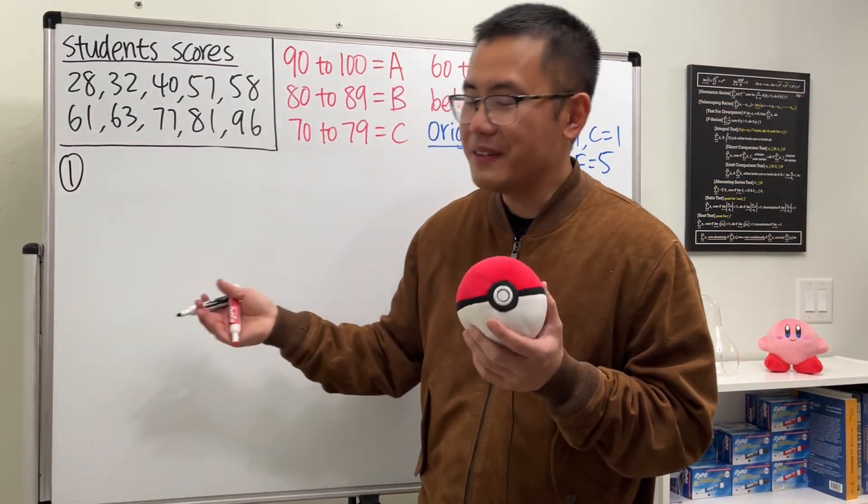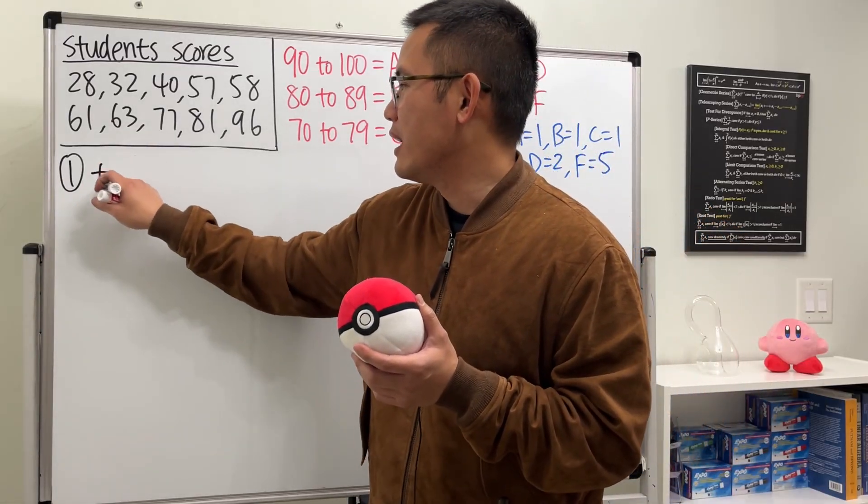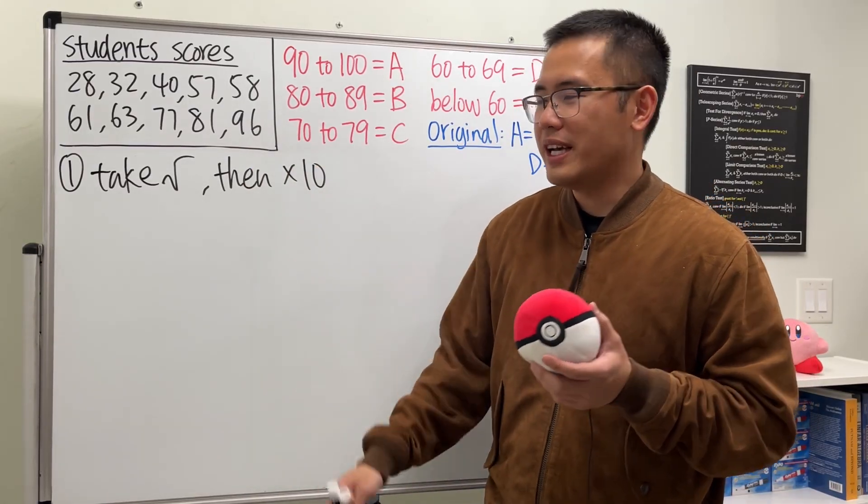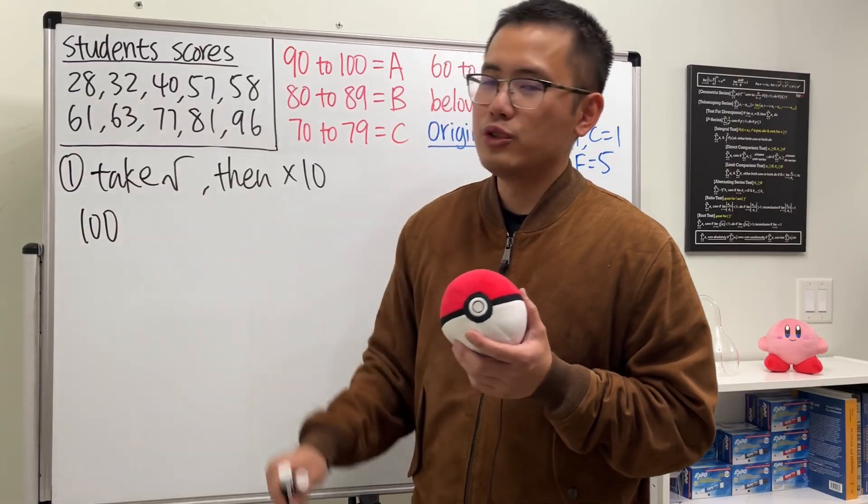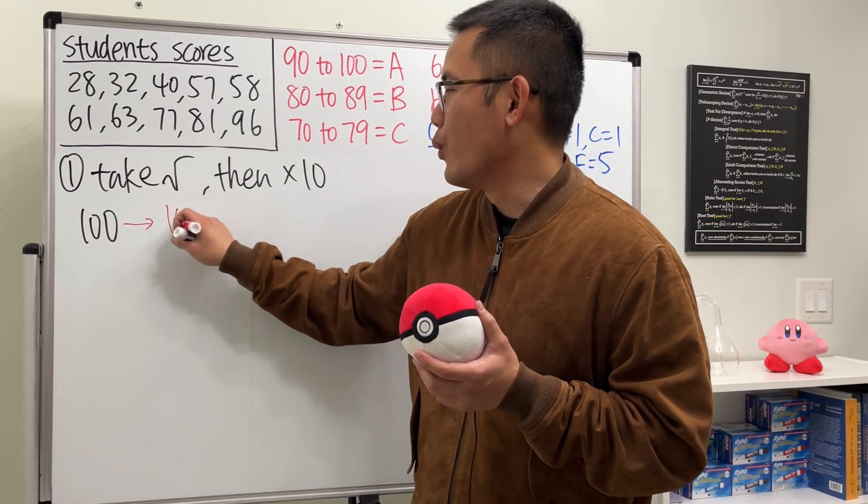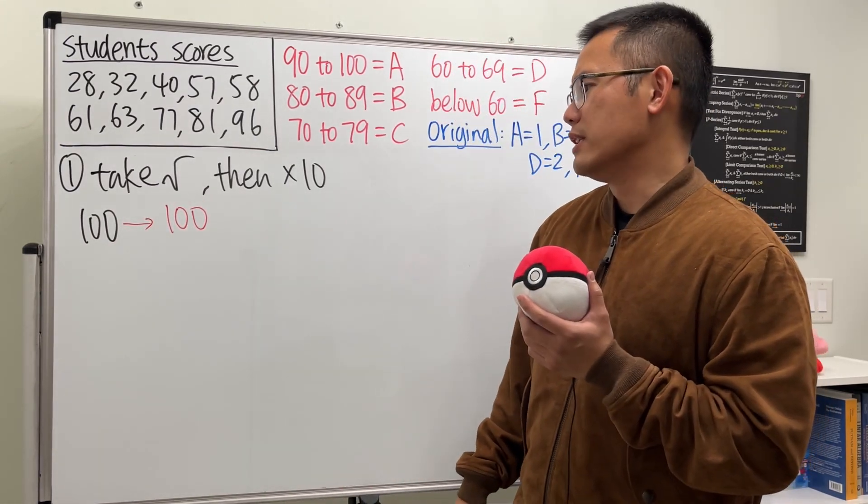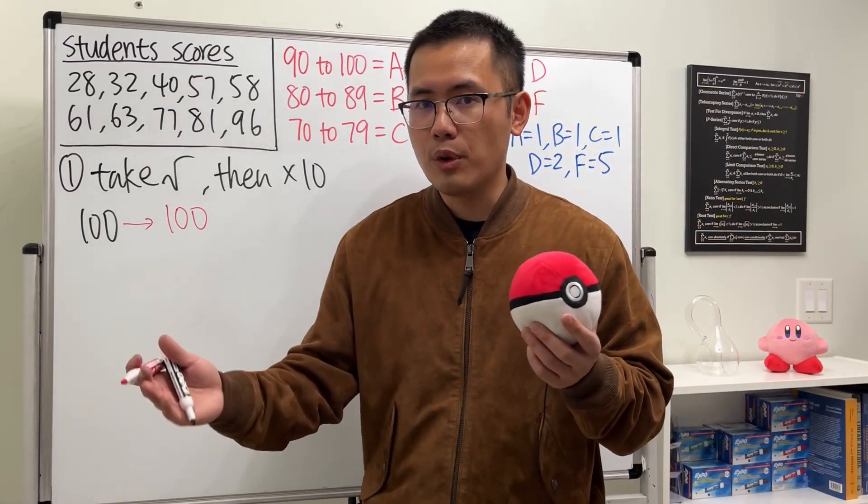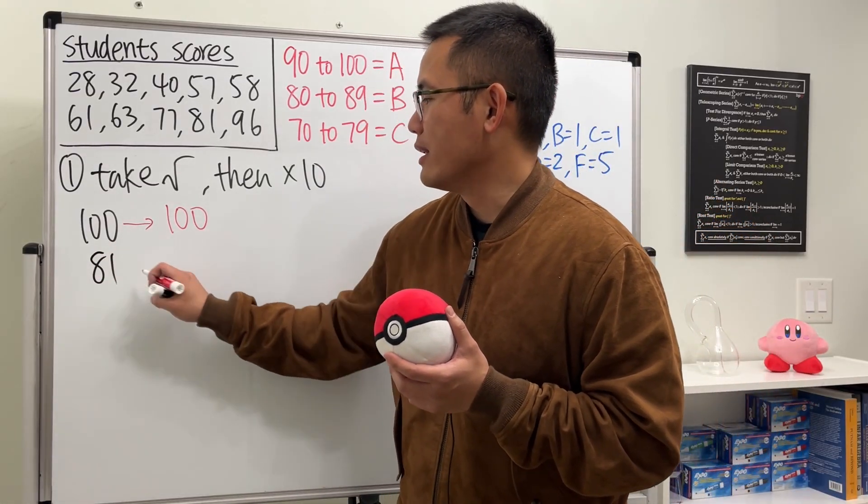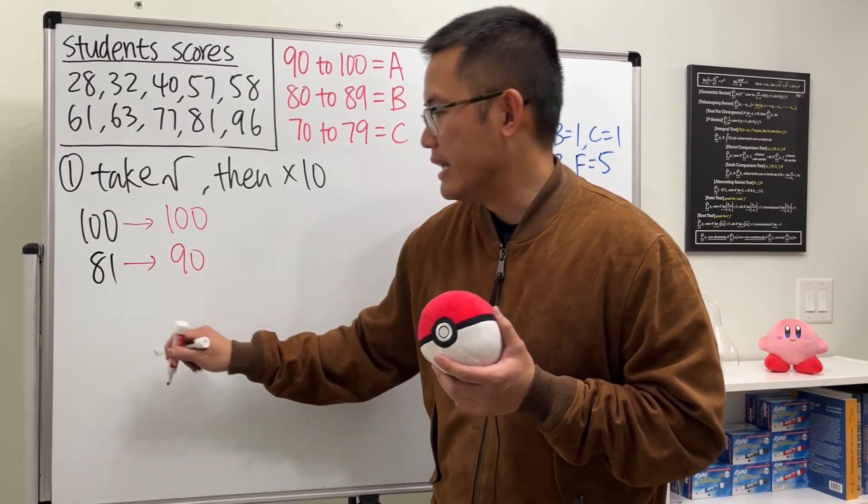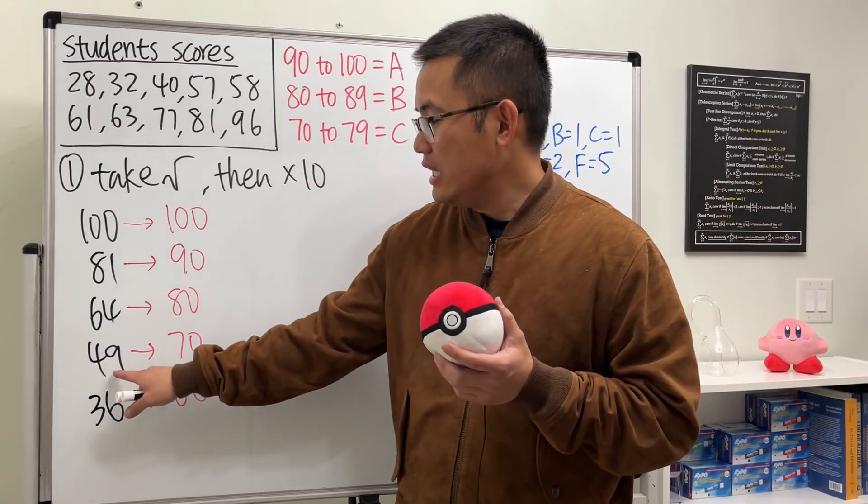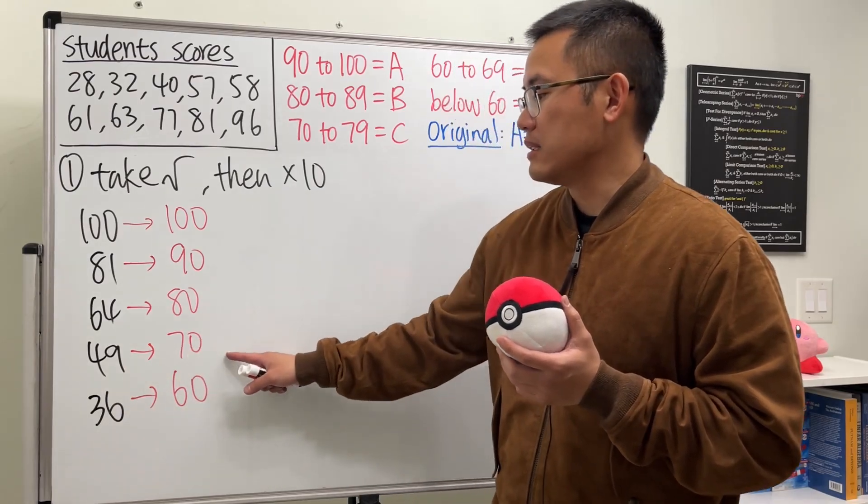The first way, the first curve is the Taiwanese teacher's way, which again, we are going to take the square root and then multiply the result by 10. So what exactly do we get? Imagine if a student gets 100 points originally. Take the square root of that, which is 10, and multiply by 10. The student is still going to get 100 points. I think this is one of the reasons why the teachers love this, because nobody can get above 100 points. And next number though, let's take a look at 81 because this will give us 90.